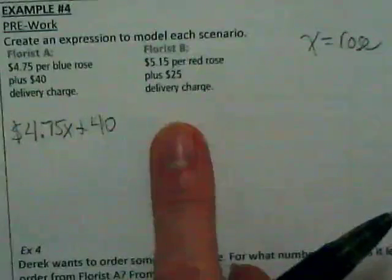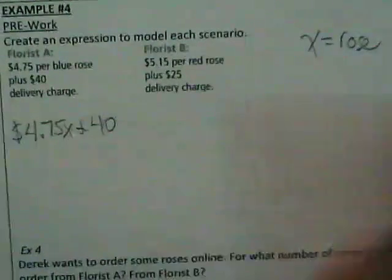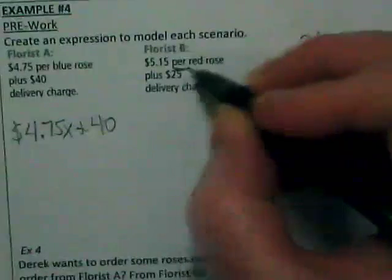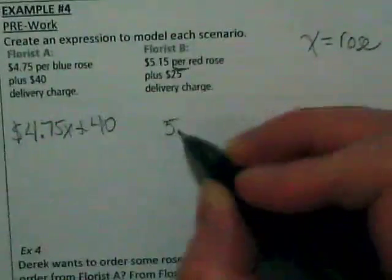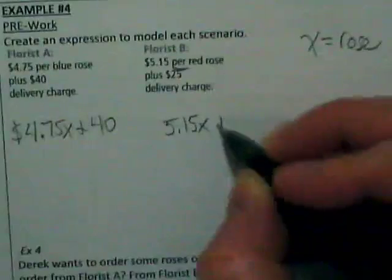On this side, we've got $5.15 per red rose. That 'per' is what's telling us that that's what's going to be multiplied. And we have 5.15X plus 25.